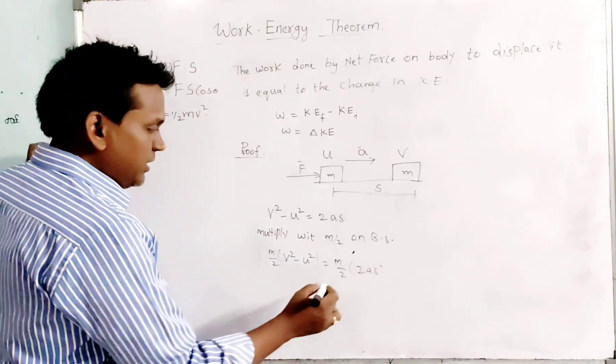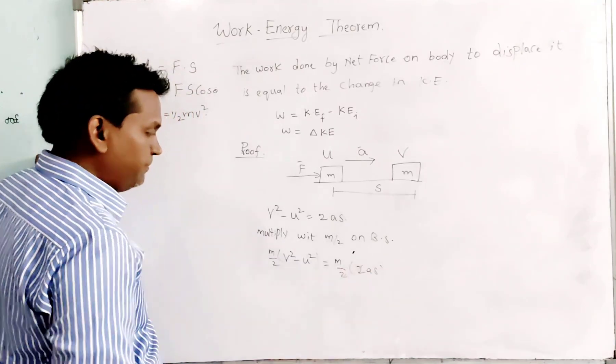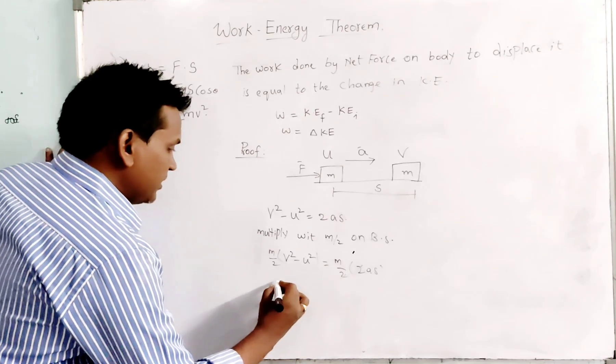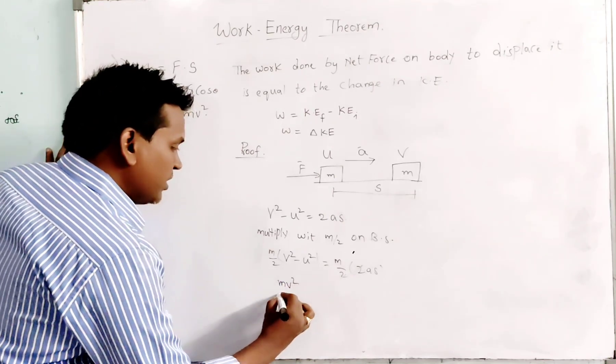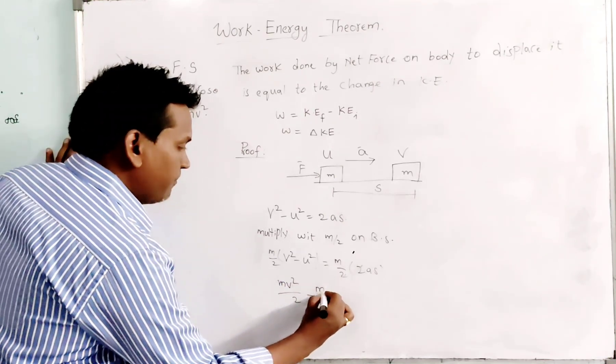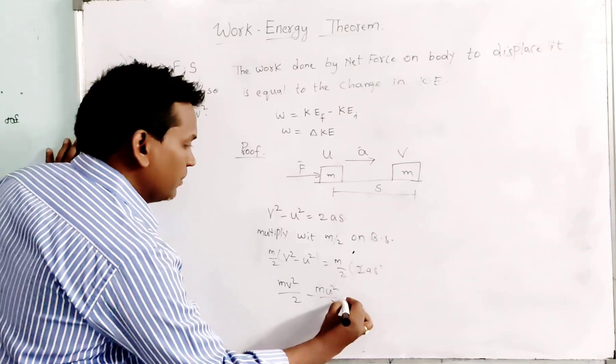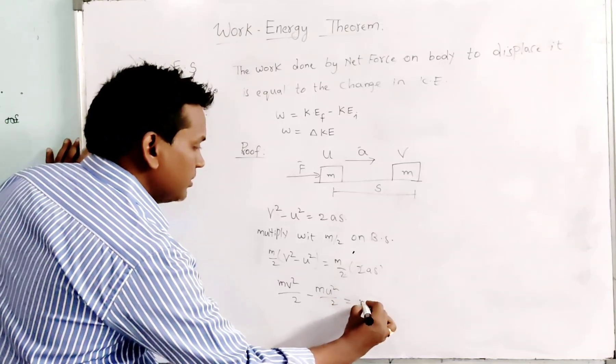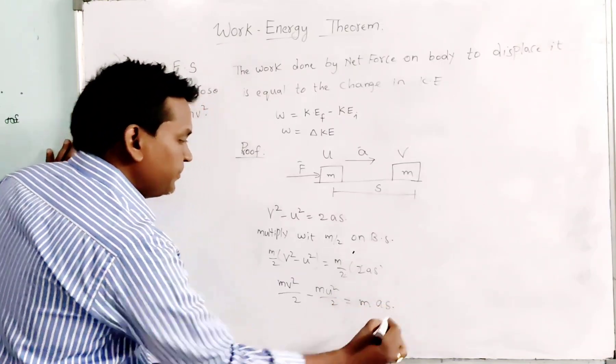If you see the equation here, we can cancel this 2 and 2. And here this will be MV square upon 2 minus MU square upon 2, that equals MAS.